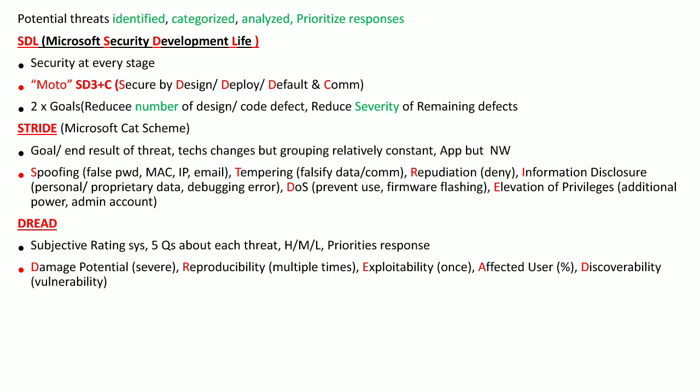The five DREAD questions are: first, Damage Potential — the severity of the threat; second, Reproducibility — how possible or complex it is to reproduce the same threat multiple times; third, Exploitability — how difficult it is to exploit or perform this threat; fourth, Affected Users — what percentage of users in your company are affected; and fifth, Discoverability — how easy it is to discover the vulnerability causing the threat.